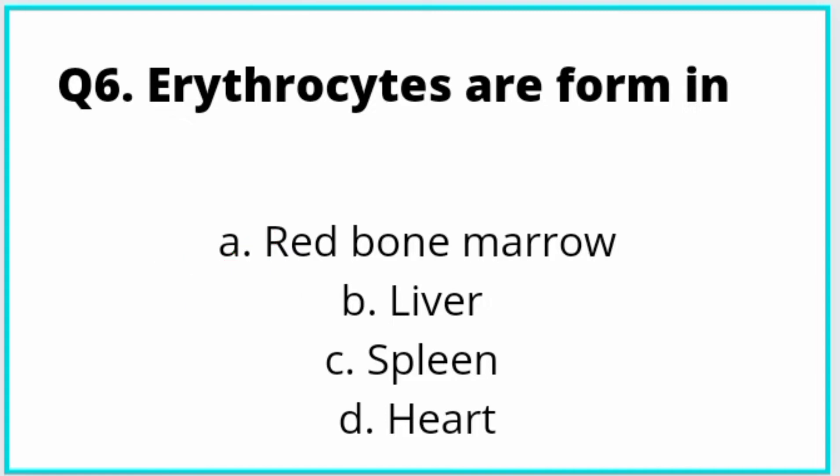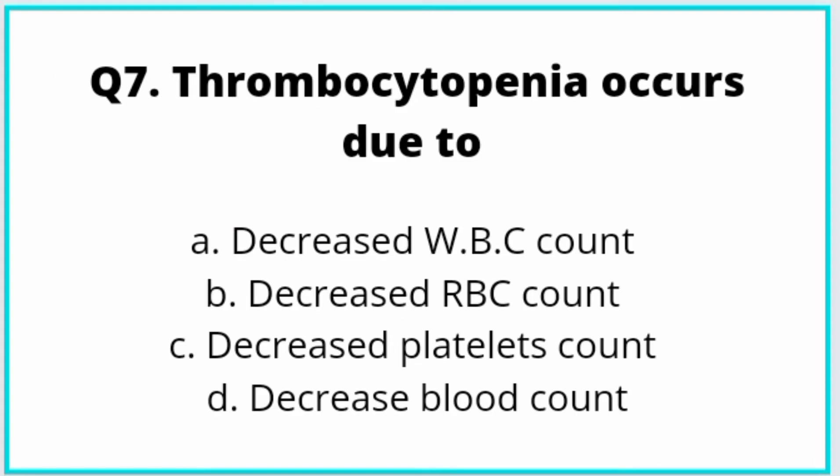Question number seven: Thrombocytopenia occurs due to which condition? The correct answer is option C: decrease in platelet count.